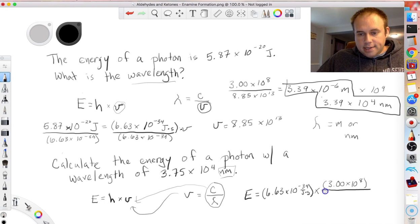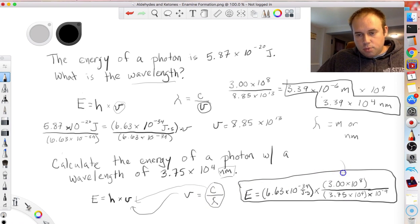So lambda in this case is 3.75 times 10 to the fourth. That's a nanometer. So I'm also going to multiply by 10 to the minus ninth in order to convert it to meters. So this entire equation right here will get you energy. Now you could have solved just this portion and then found the value for frequency and plugged it into the energy equation. That's also acceptable if you did that.